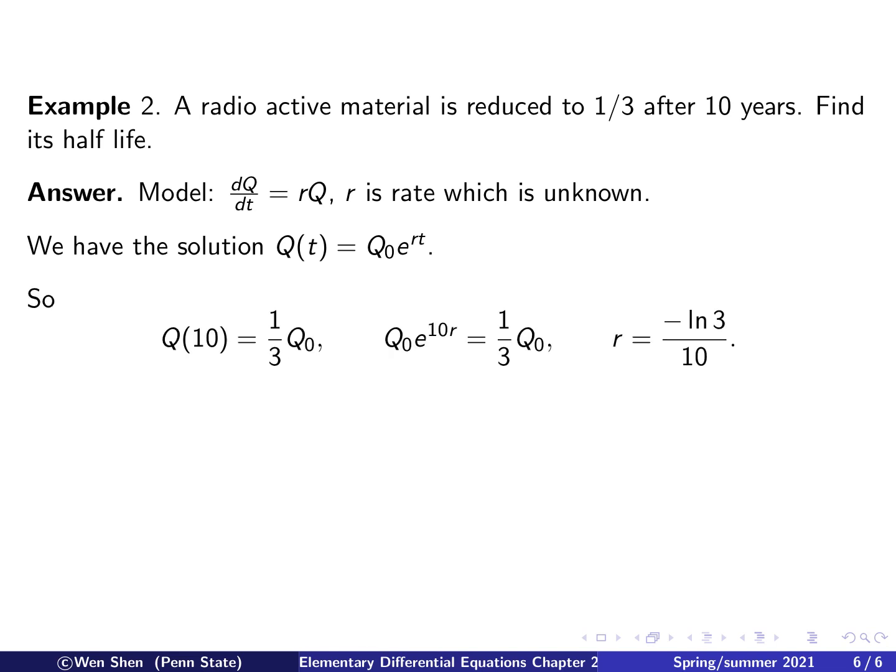Okay, so the problem says after 10 years, the quantity reduced to one-third of the original one, so which means Q at 10, if I put in the unit of time is in years, would be a third times Q0. Okay, so what is Q at 10? Well, we have the equation solution here, that's Q0 e to the 10 times r, and that shall be a third of Q0, right?